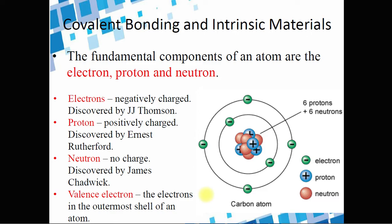Let's review the basic structure of an atom. We have electrons, protons, neutrons, and valence electrons. For example, a carbon atom has four valence electrons — six electrons in total. Valence electrons are the electrons in the outermost shell of an atom. It is very important to recall this topic because we are going to use it in our discussion of semiconductors.